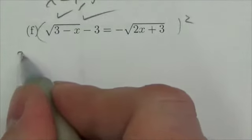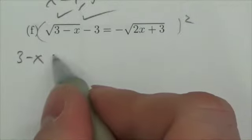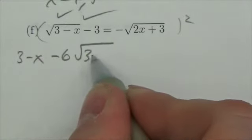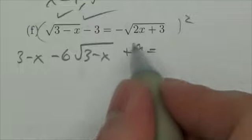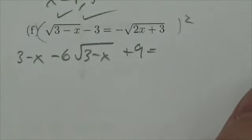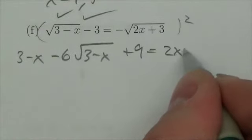So when I square this, I'm going to get 3 minus x minus 6 root 3 minus x plus 9 is equal to... That negative 1 squared is just going to go away and I'll be left with 2x plus 3.